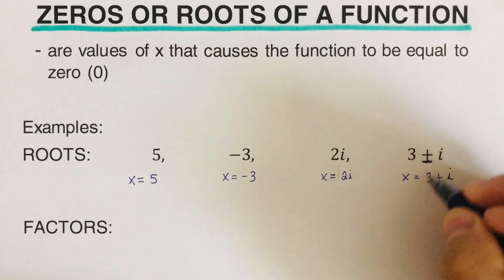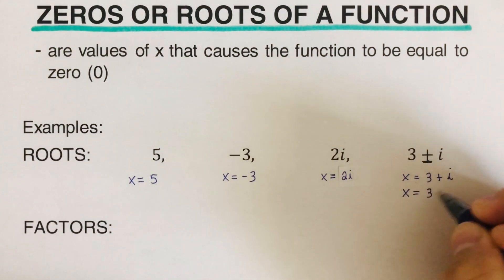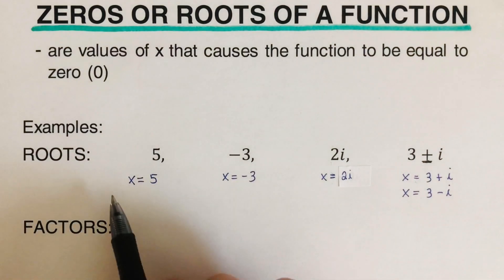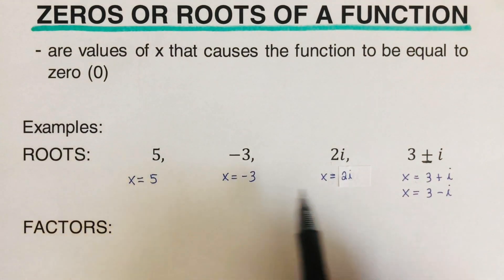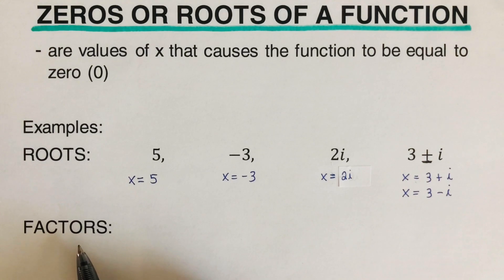And the other one from the plus-minus notation would also be x is equal to three minus i. Now if we want to change these roots into factored form, we are going to use the zero product property backwards.